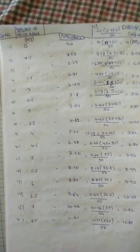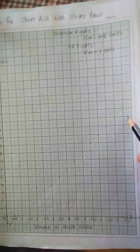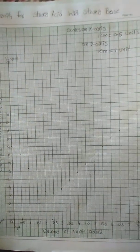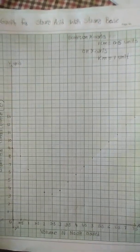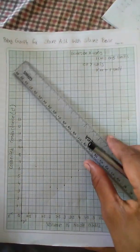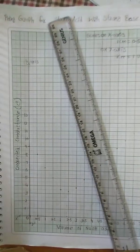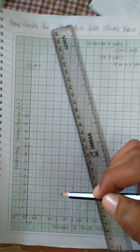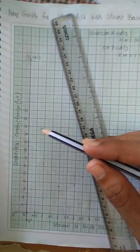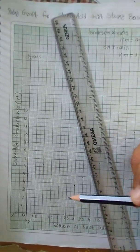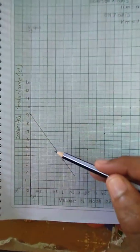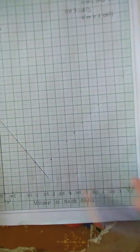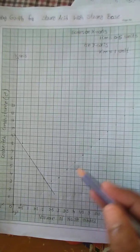Similarly, all the points are plotted on the graph. After plotting all the points, we have to join them with the help of a scale, making sure that most of the points lie on the same line. Similarly, we have to join the other side by extending its end.